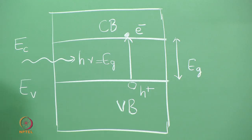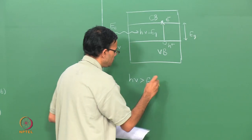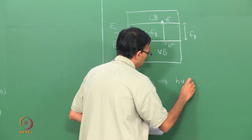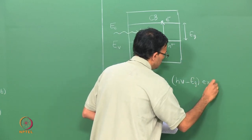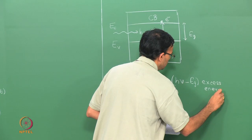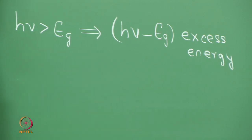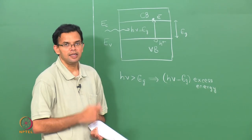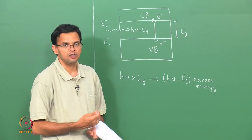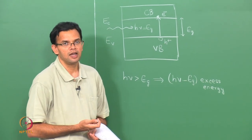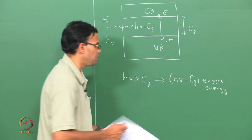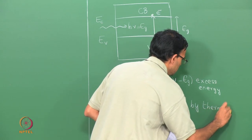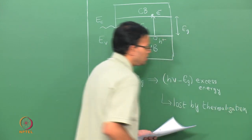Now, if H·nu is greater than E_g — meaning the light has an energy greater than the band gap — there is some excess energy that is left. This excess energy can be manifest in the electron in the conduction band, the hole in the valence band, or both. In this case the electron or the hole loses this excess energy by a process called thermalization, where the energy is lost to the lattice and the carrier goes to the edge of the valence or conduction band. This excess energy is just transferred to the lattice.